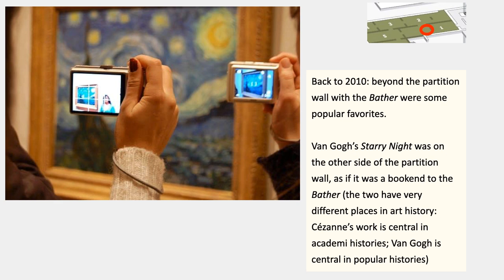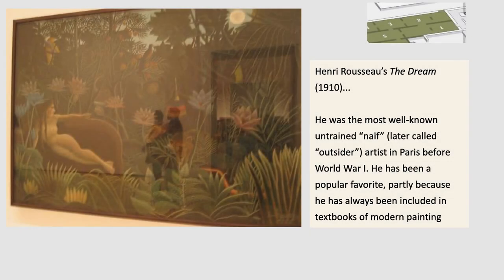Van Gogh is very central in popular histories of art, but not at all central in the narrative that MoMA promoted and in the books and scholarship that follow the MoMA model. Cézanne, on the other hand, is absolutely central in academic histories. Still in that room, on the back wall on the right, was Henri Rousseau's The Dream. He was the most well-known of the untrained, naive painters — later called outsider artists — in Paris before the First World War.